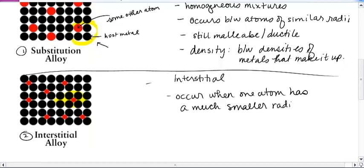Sometimes that smaller radius atom is even not a metal. In the case of steel, which I'll mention in a moment, it's carbon. So it doesn't have to be a metal, but overall it has the properties of a metal.